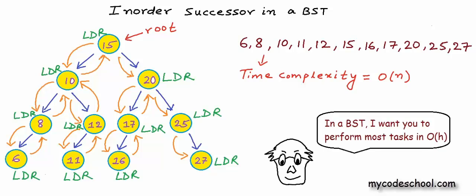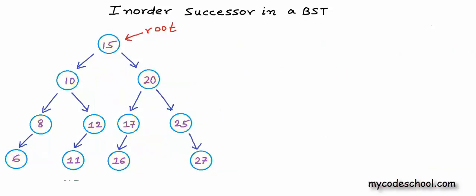Finding next and previous elements in some data could be a frequently performed operation. The good thing about binary search tree is that frequently performed operations like insertion, deletion, and search happen in O(h), where h is the height of the tree. So it would be good if we are able to find successor and predecessor in O(h) as well. We always try to keep a tree balanced to minimize its height. Height of a balanced binary tree is log n base 2, and O(h) running time is almost the best we can have. So can we find inorder successor in O(h)?